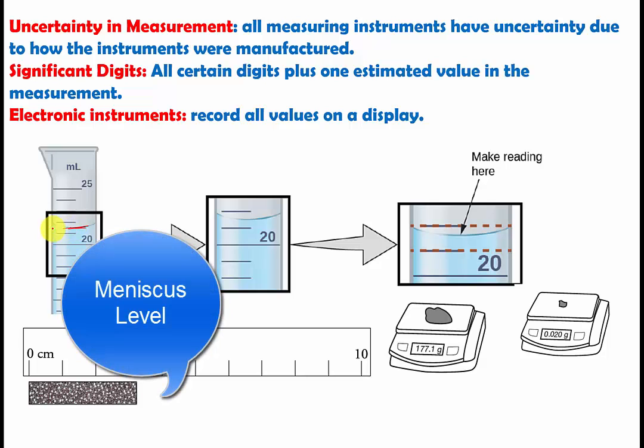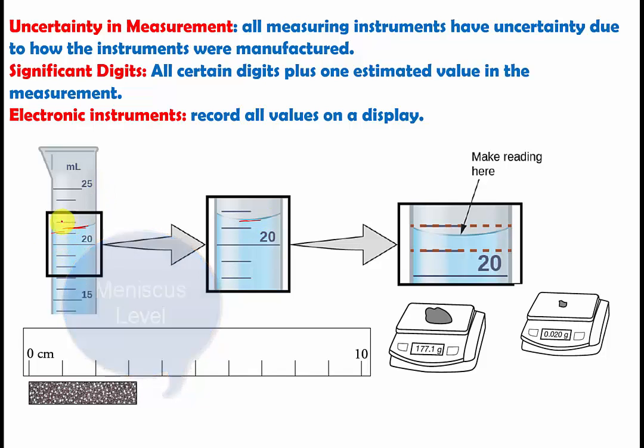And we zoom it in, and we can see it right there. But by looking at this, we know that one mark represents one line. One increment is 1, 21, 22, 23, 24, and 25.